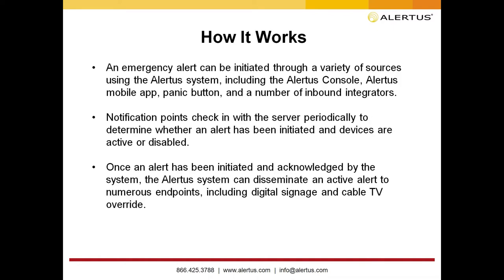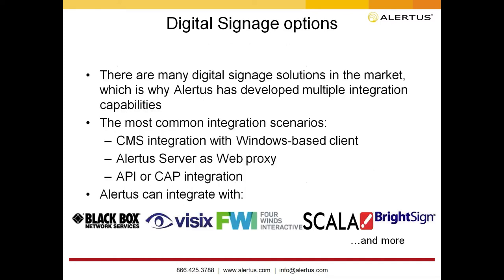An emergency alert can be initiated through a variety of sources: the Alerts Console, mobile app, panic buttons, or inbound activations including from your personal recipient service. All notification points check in with the server so we can supervise those endpoints and confirm they're available and ready to activate. Once an alert is activated, any acknowledgments are tracked through the system and reported as well.